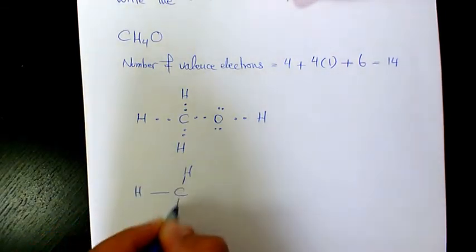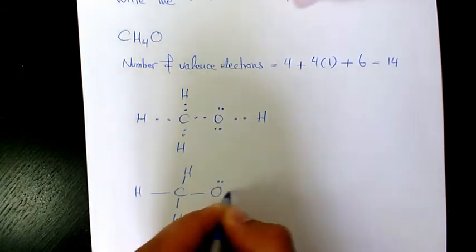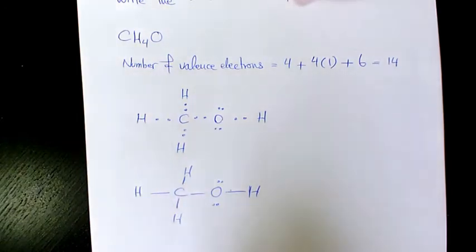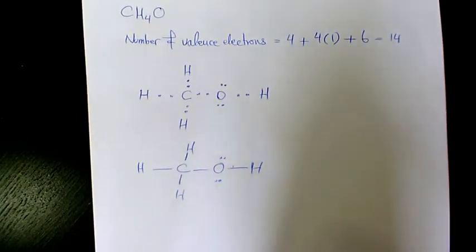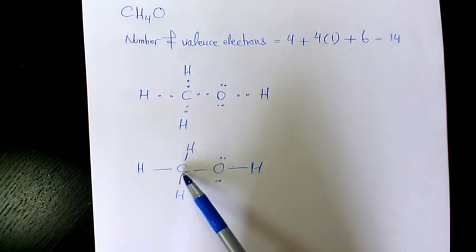And I need to show the single bonds like that. So we have one, two, three, four, five single bonds and two lone pairs.